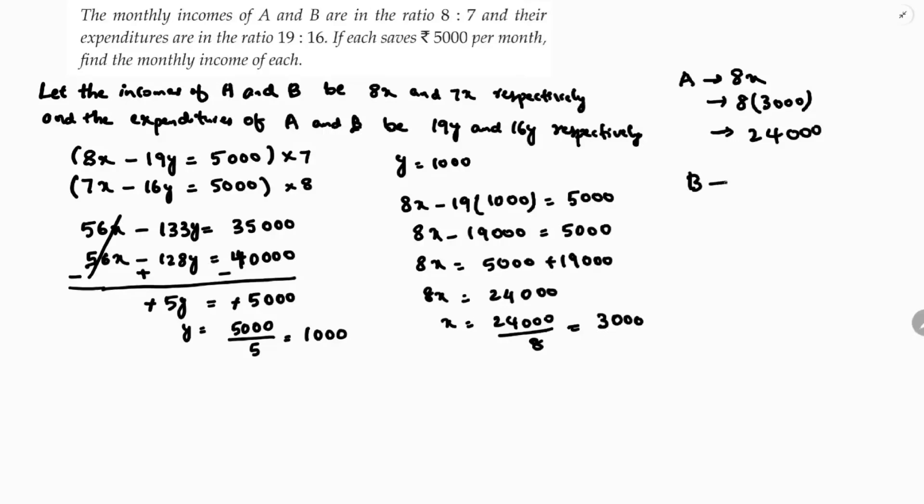Next B ratio is 7, 7x, 7×3000, that is 21000. So A's income is 24000 and B's income is 21000. If you'll ask expenditures, then you can multiply, see like 19×1000=19000 because y is 1000, and B's expenditure is 16000 because 16y, 16×1000.